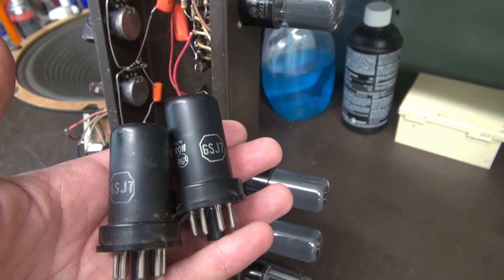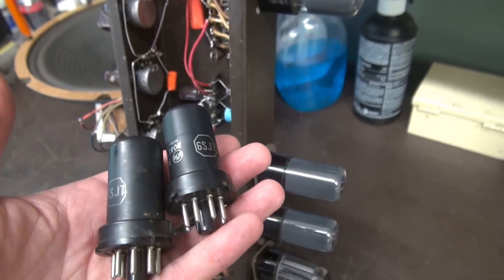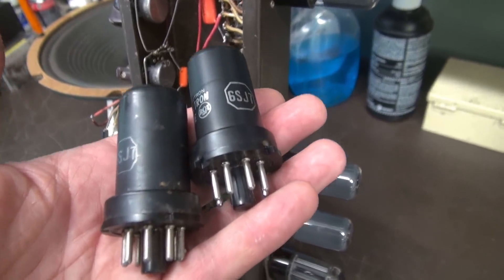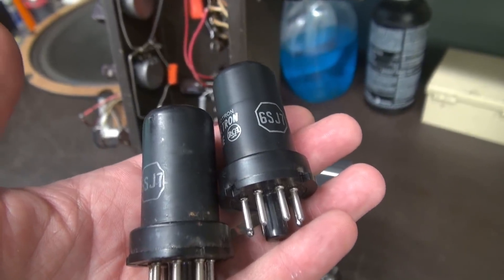All right, so we'll start with these two metal jacket 6SJ7s. They appear to be RCAs. We'll get some new ones in there and see if the microphonic sensitivity that we seem to have on those inputs goes away.